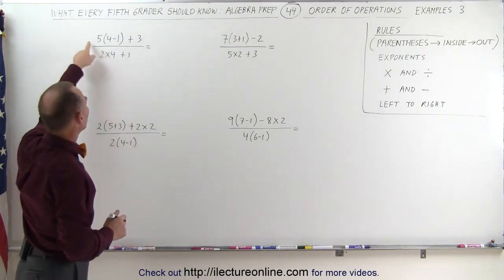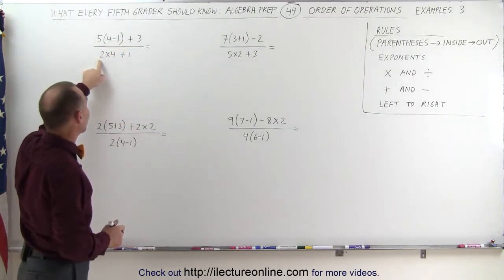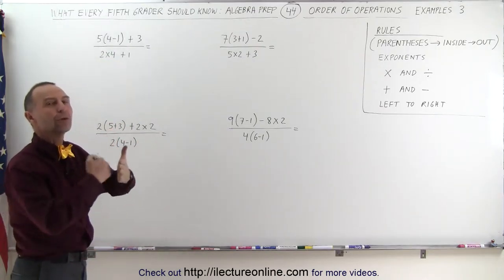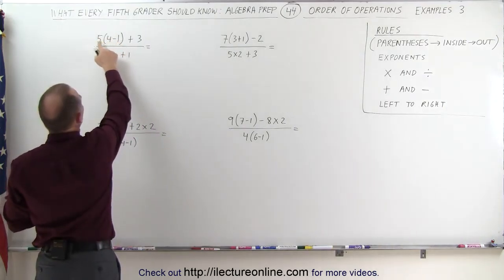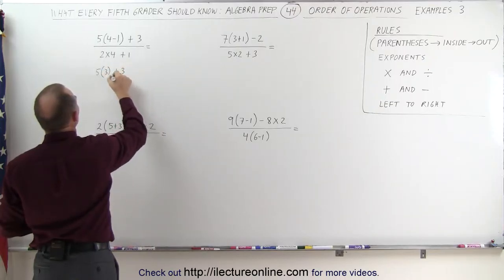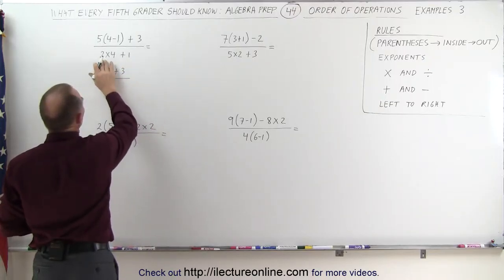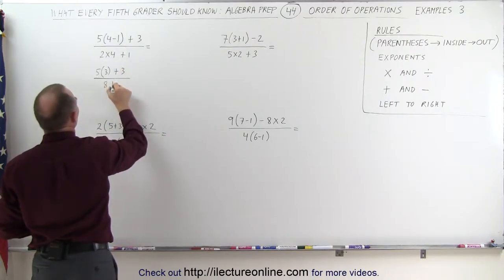In this example, we're going to simplify the numerator until we get it down to one number, then we're going to simplify the denominator until we get it down to one number, and then we're going to do the division. First, we want to get rid of the parentheses. This becomes 5 times 4 minus 1 is 3, plus 3 divided by, and here we could already do 2 times 4, 2 times 4 that's 8 plus 1.